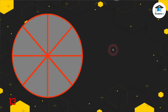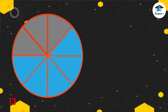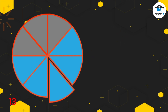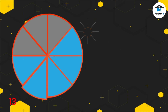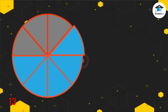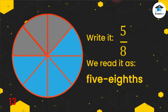Let's have another example. Look at the figure below. It's divided into 8 equal parts. We are going to color 5 eighths of the circle. In this figure, we colored 5 out of 8. How many parts are being shaded? 1, 2, 3, 4, 5. There are 5 parts that are shaded. How many equal parts are there? 1, 2, 3, 4, 5, 6, 7, 8. There are 8 equal parts. We write it like this, and we read it as 5 eighths.